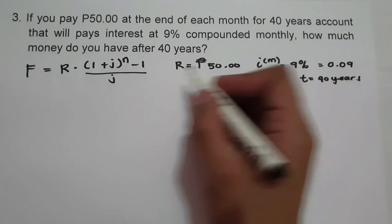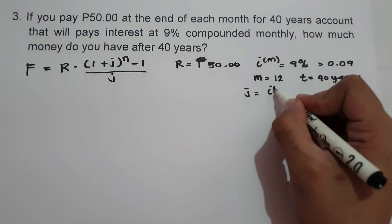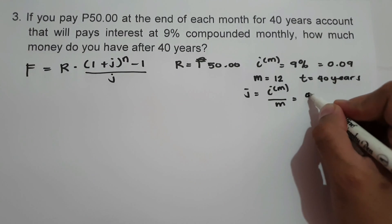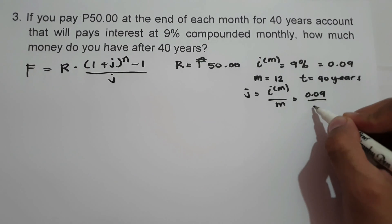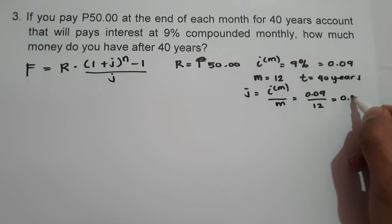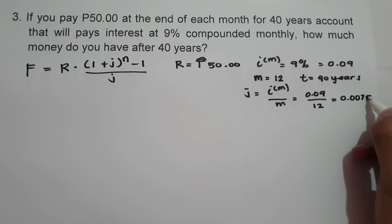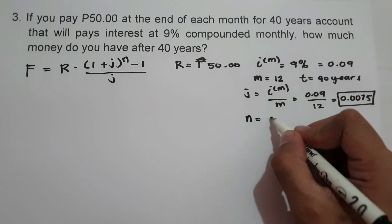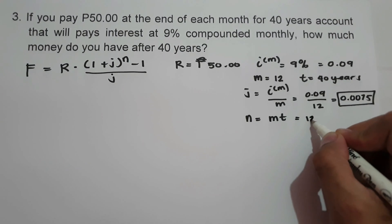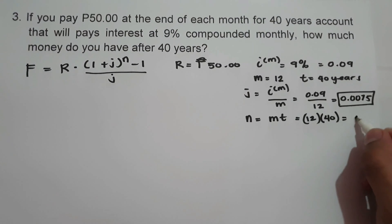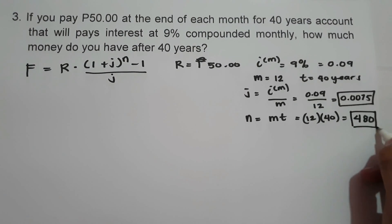Let us find the value of j using i raised to m over m. I raised to m is 0.09, and m is 12, so 0.09 divided by 12 gives j equals 0.0075. Then let us find the value of n, which is m times t: 12 multiplied by 40 equals 480. So n equals 480.